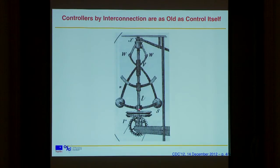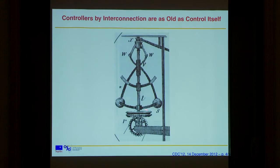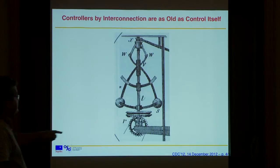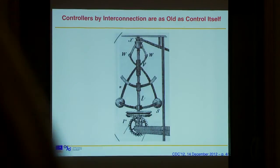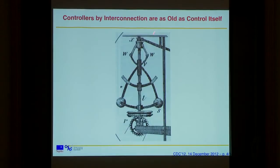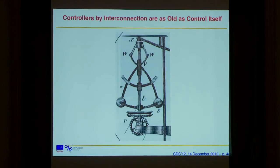The Watts governor — many people say the industrial revolution in England happened because of devices like this. They were able to control steam engines by introducing the Watts governor. The turbine starts spinning, and because of centrifugal forces these bolts open up and push down a lever that blocks the input of steam. That's how this thing operates. If you want to do this in a block diagram with inputs and outputs, it's very complicated — you don't know what is the input and what is the output. But the behavior is very robust and very reliable.